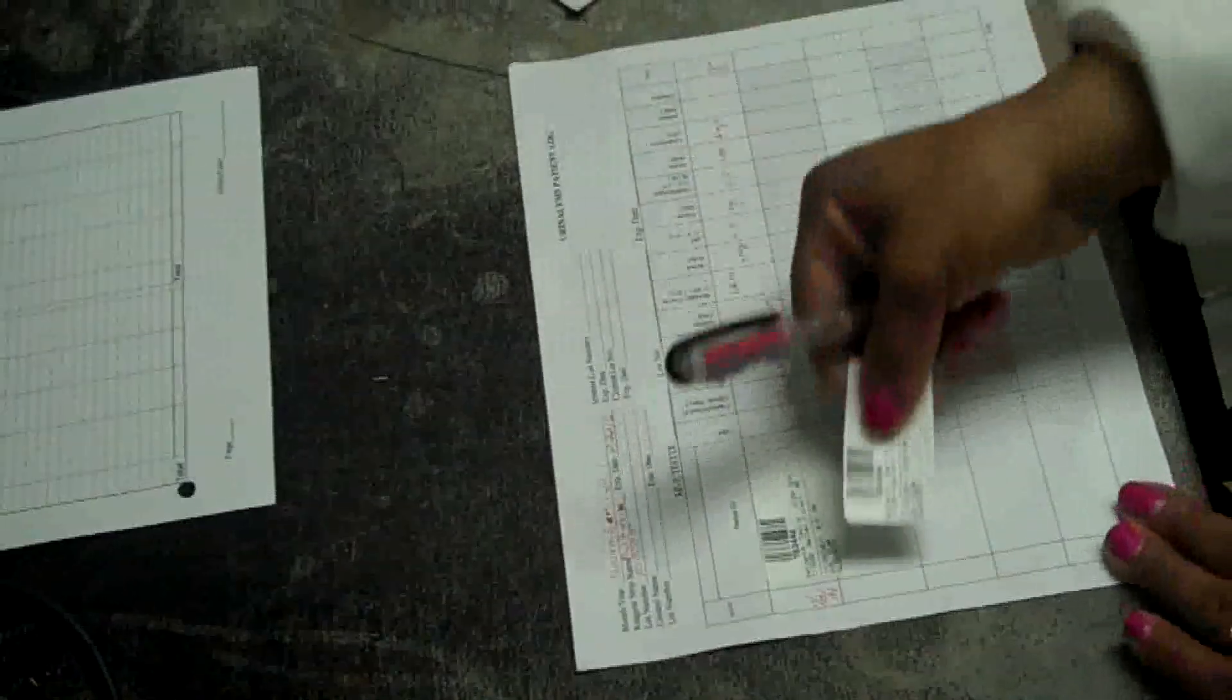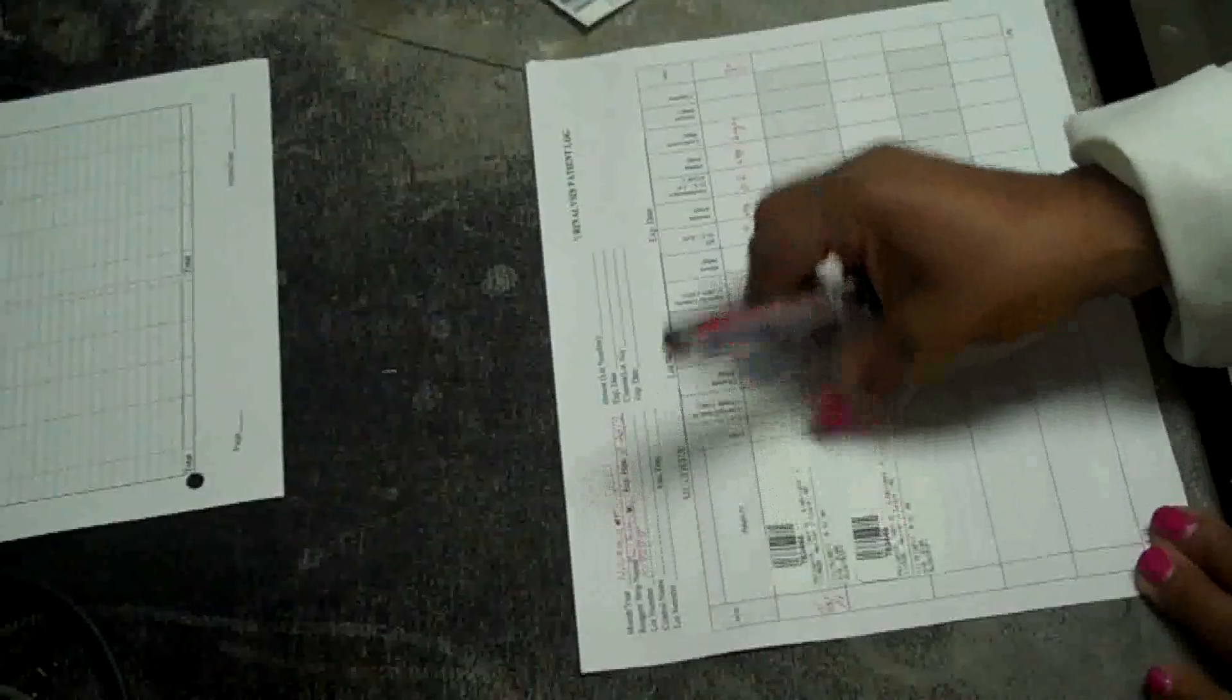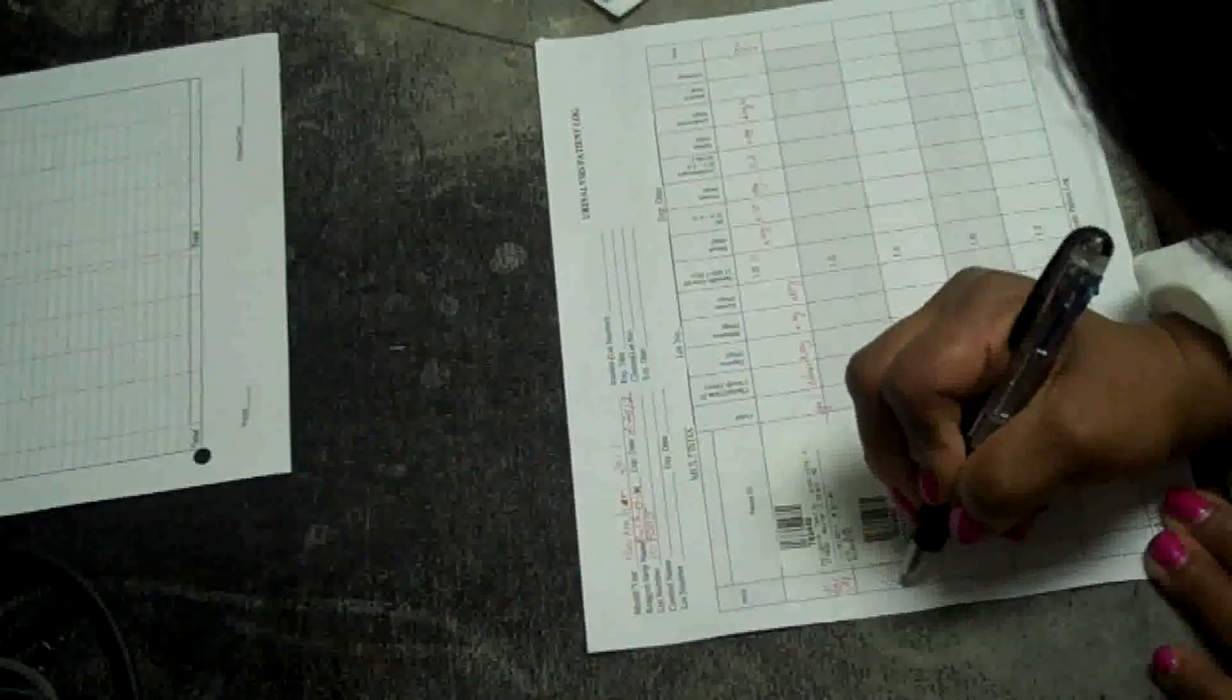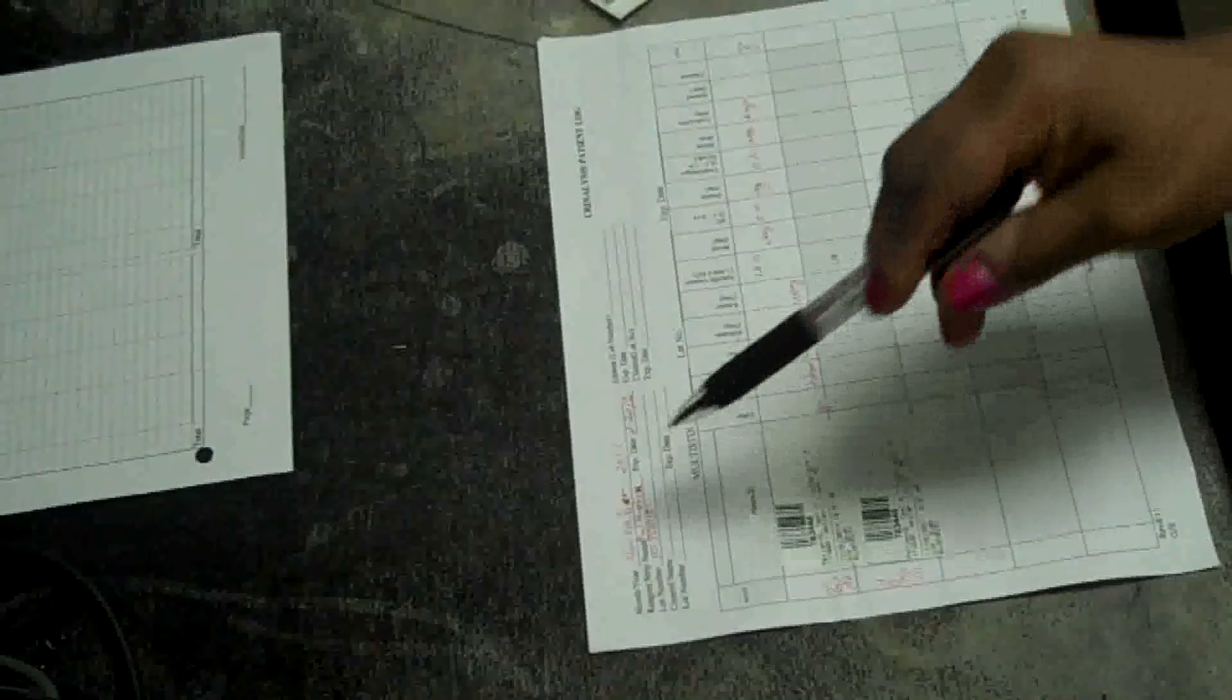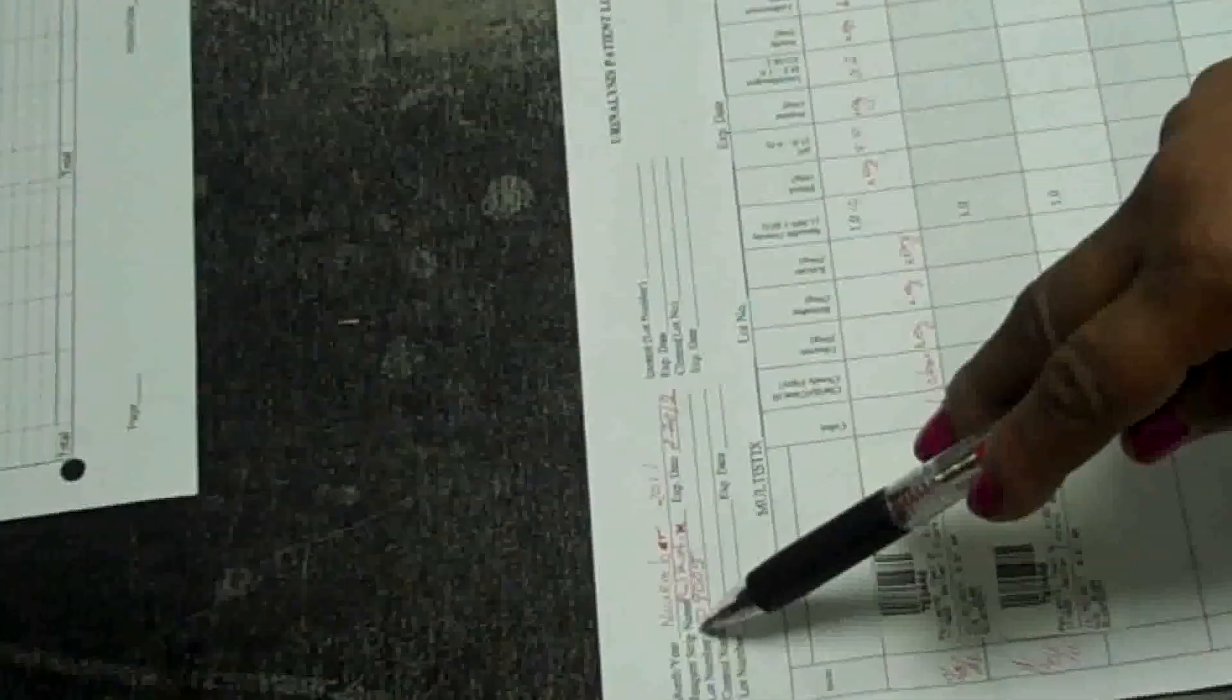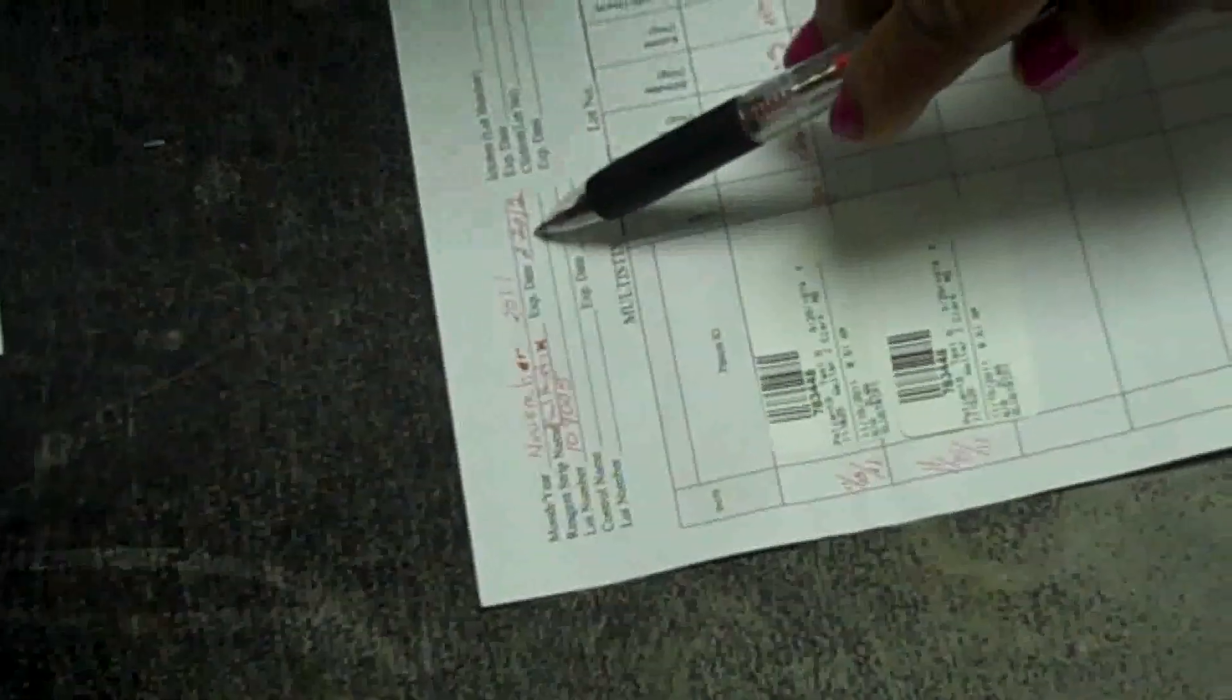Complete your urinalysis log and include your test date. Complete the urinalysis log with the month, the year, your reagent strip name which is MaltiStix, your expiration date and the lot number.